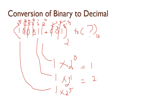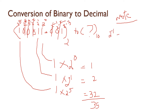Now 32 plus 2 plus 1 equals 35 — this matches the previous decimal value. For the fraction value: 2 power of minus 1 equals 0.5, 2 power of minus 2 equals 0.25, 2 power of minus 3 equals 0.125.